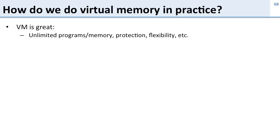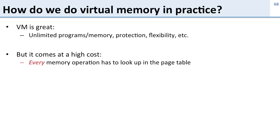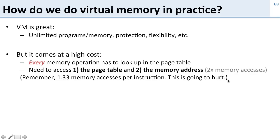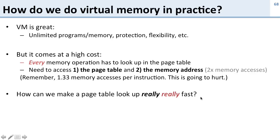Virtual memory is great — we saw all the great things we can do with it — but it comes at a very high cost. Every time we access anything in memory, whether data or instructions, we have to look it up in the page table to get the translation from the virtual address to the physical address. So we've now doubled our number of memory accesses. How can we make a page table lookup really, really fast?